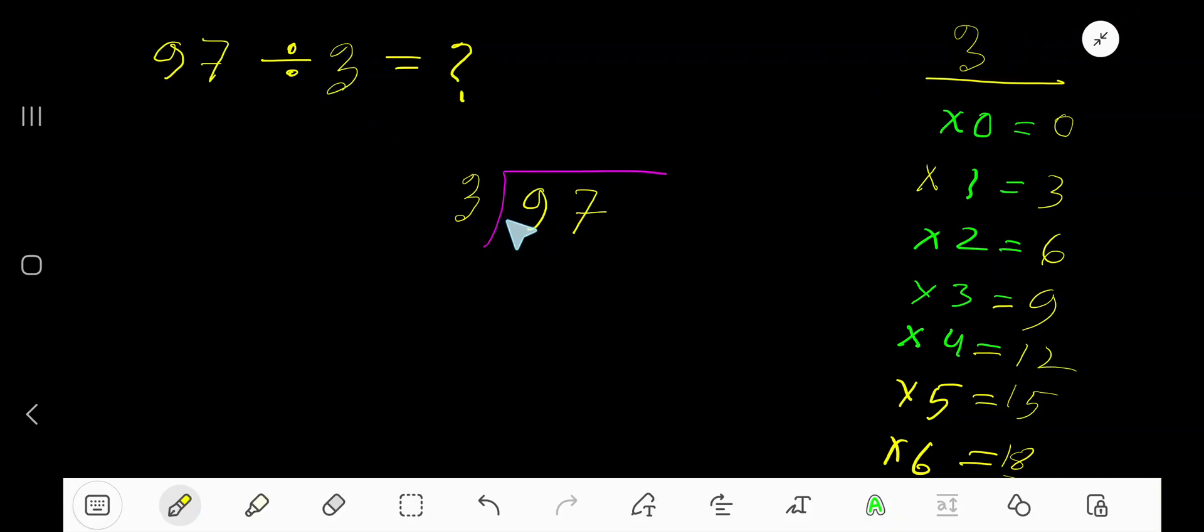97 divided by 3. Here 3 is the divisor, so we need the multiplication table of 3: 3 times 0 is 0, 3 times 1 is 3, 3 times 2 is 6, 3 times 3 is 9. To find the multiplication table of 3, just add 3 to the previous step: 0 plus 3 is 3, 3 plus 3 is 6, 6 plus 3 is 9.